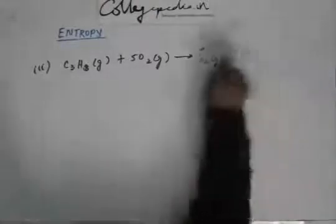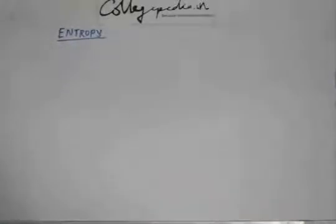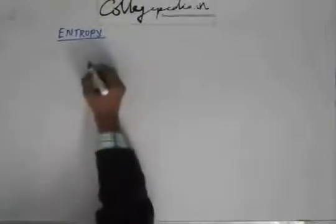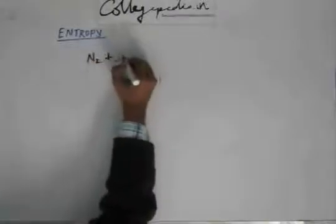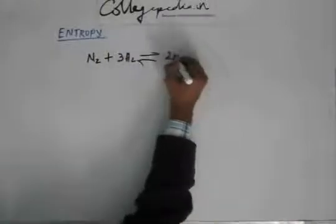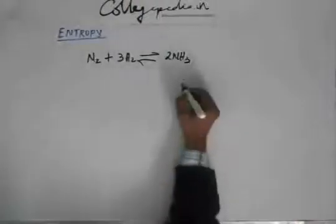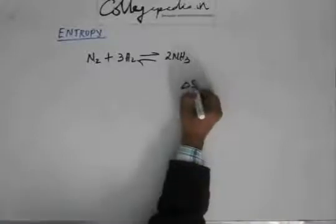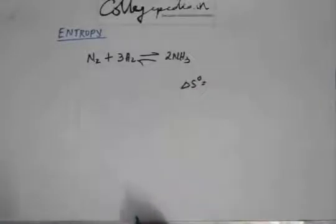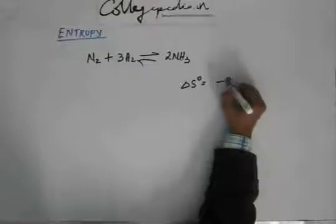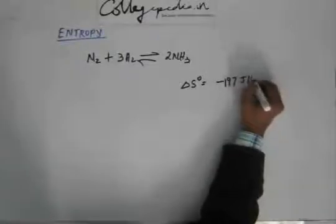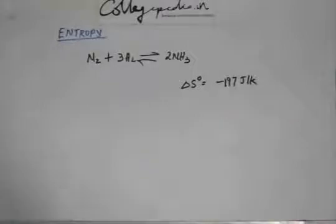We have been calculating delta S of reaction, but that delta S is not going to give us any information about the spontaneity of the reaction. Revisiting the first reaction we worked on — the formation of ammonia gas in the gaseous state — we calculated delta S of the reaction previously, but that delta S (say, minus 197 joule per Kelvin) is not going to help in identifying whether this reaction is spontaneous or not.